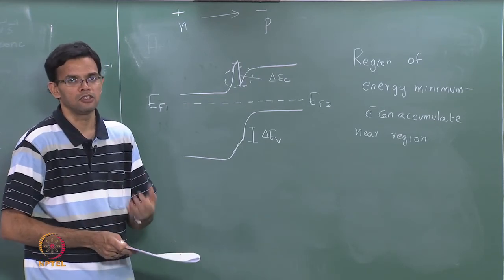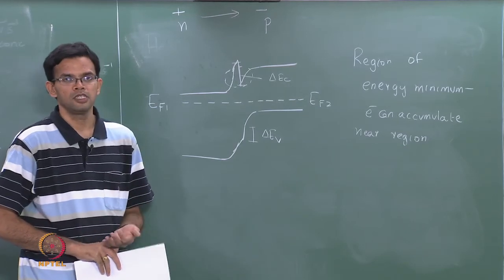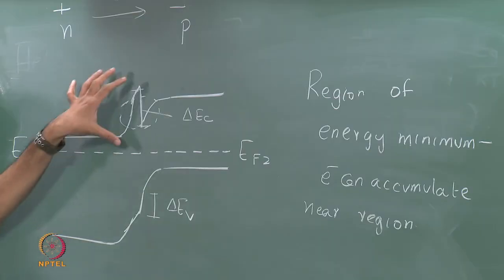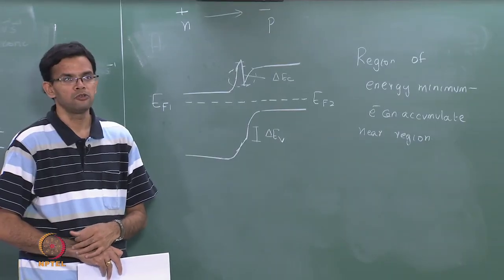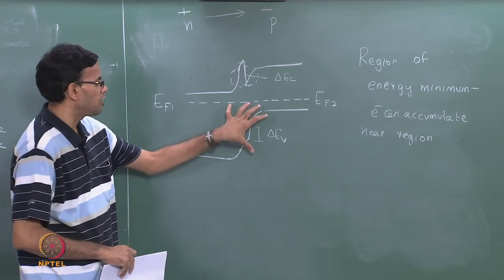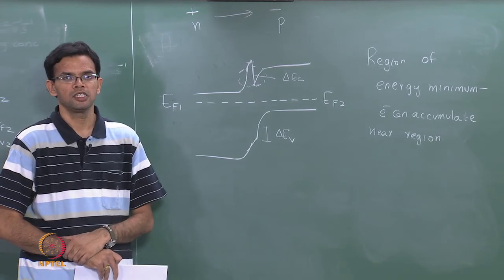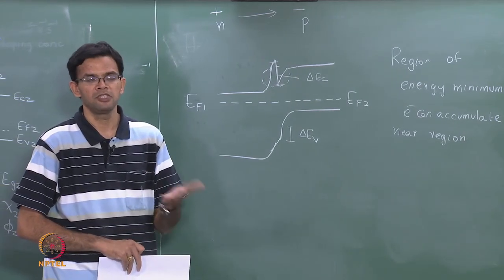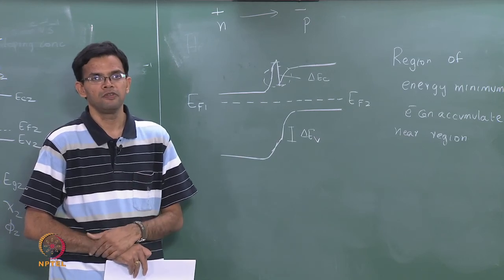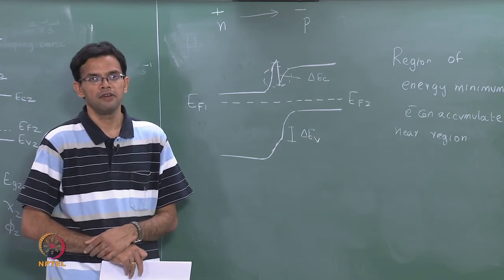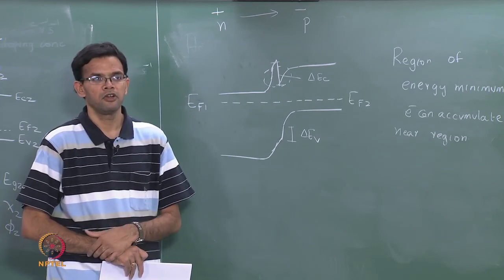Looking at the conduction band in the heterojunction band diagram, there is a region of energy minimum near the junction, so electrons in the p-side can accumulate there. The energy barriers are different for the conduction band and valence band, meaning the barriers are different for electrons and holes, affecting the conductivity. Heterojunctions have important optical properties due to this electron accumulation. If instead the p-side has the higher band gap, you see accumulation of holes near the junction. With this we conclude p-n junctions, and in the next class we will start looking at transistors, which are devices with more than one junction.